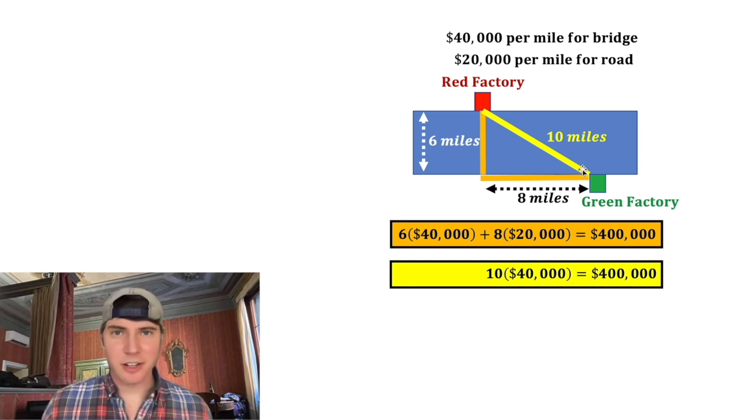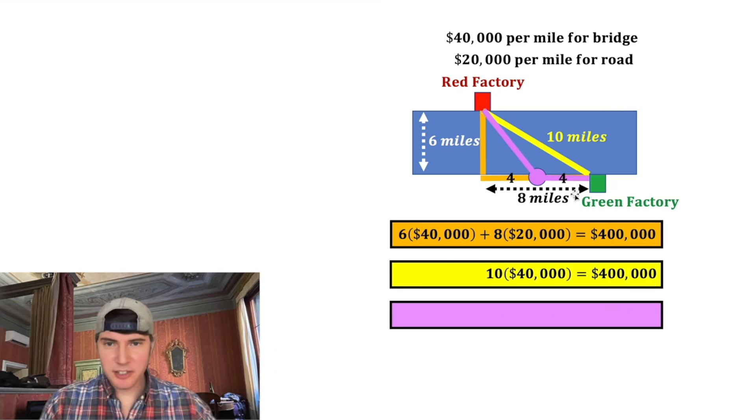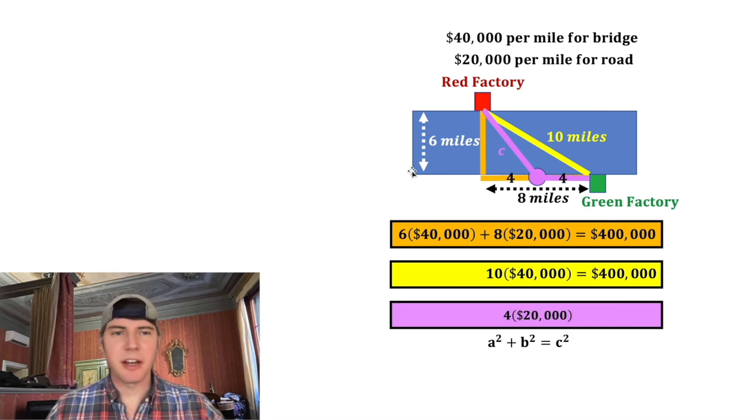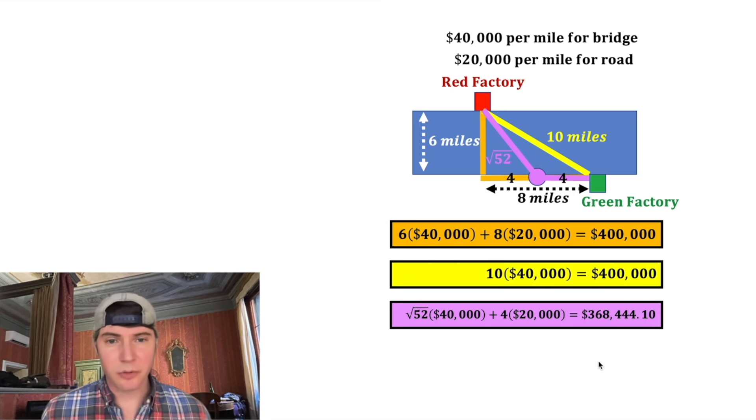Let's try something in the middle. I'm going to choose the point exactly in the middle so that it's four miles on either side of the dot. I'll connect the red factory to that dot and then go to the green factory. The road part's easy, it's just the four miles times the $20,000. The bridge is a little bit trickier. Let's call it pink c and let's do another Pythagorean theorem. 4² is 16, 6² is 36, add them together we get 52. Square root both sides and we get c is equal to √52. This sums to about $368,444.10, so it would be more efficient to aim for the spot right in the middle.